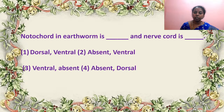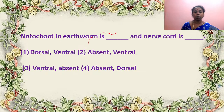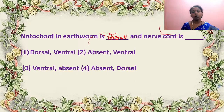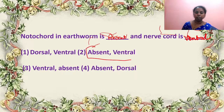Notochord in earthworm is dash and nerve cord is dash. Notochord in earthworm is actually absent — as you know, they are invertebrates and do not have the notochord. The nerve cord can be found ventrally. So it is absent and ventral — the second option is the correct answer.